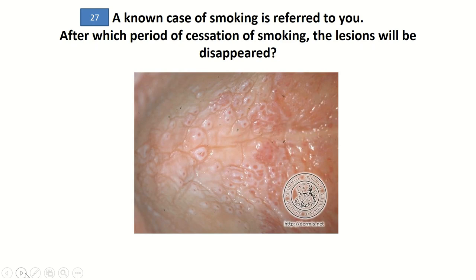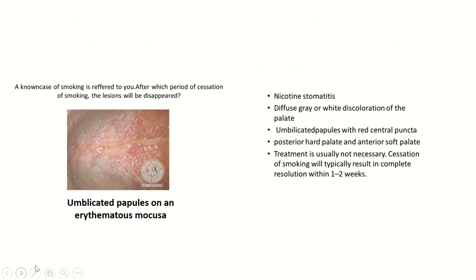In a case of smoking referred to you, after what period of cessation will the lesion disappear? After cessation of smoking, it takes about one to two weeks for complete resolution of these lesions. Multiple umbilicated papules on the erythematous mucosa are indicative of nicotine stomatitis.